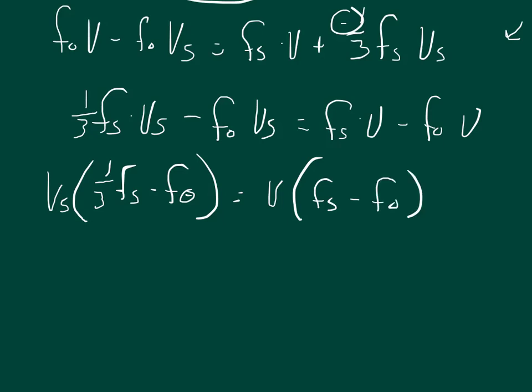It looks neat, with minus signs on the same side in both places, but that's only going to happen because of how these objects are moving relative to each other. If they had been moving toward each other, the frequencies might have been added or subtracted in a different order. Every scenario changes how these things are combined, so don't look for this nice neat pattern on a test — it depends entirely on the specific setup.